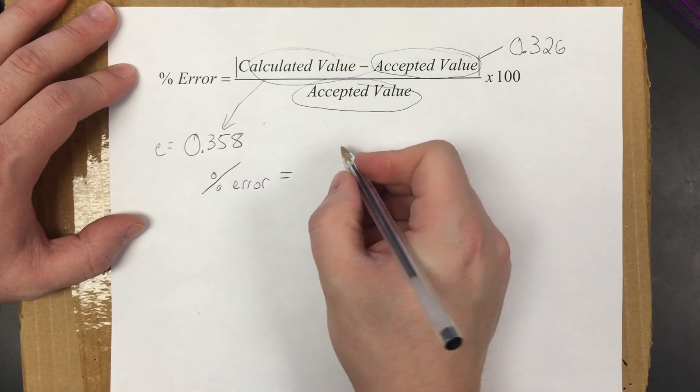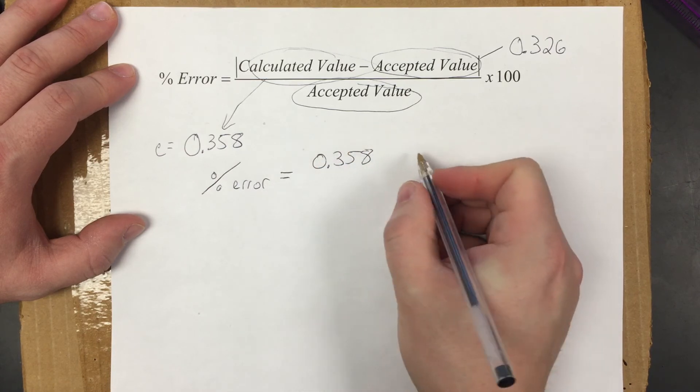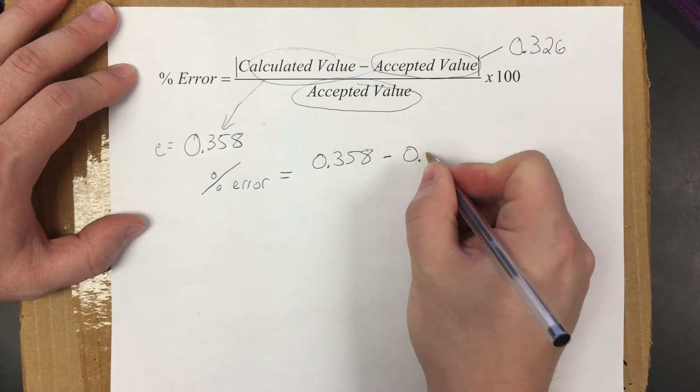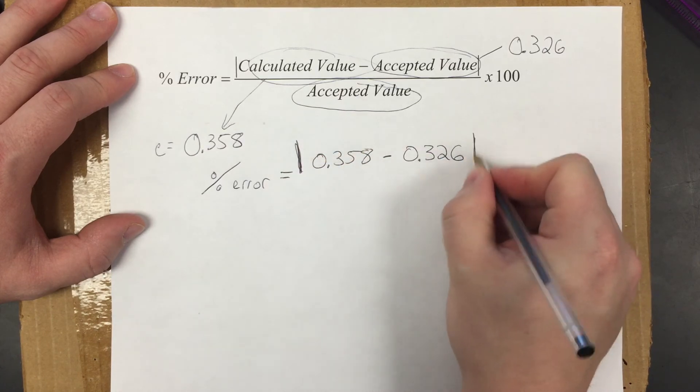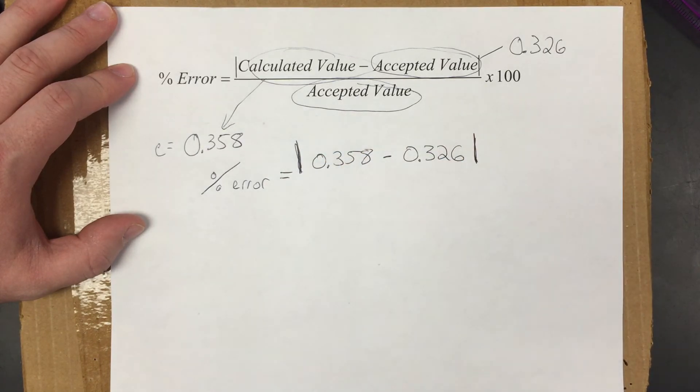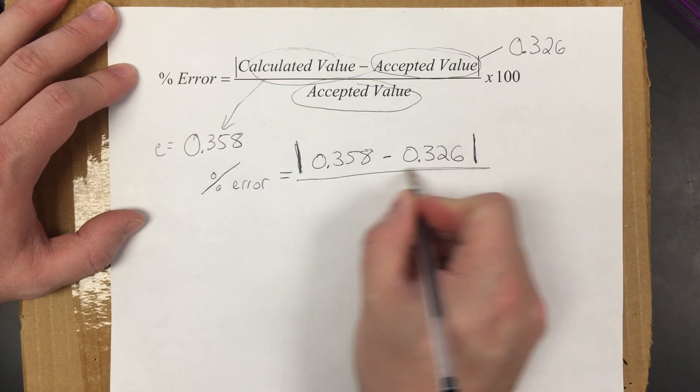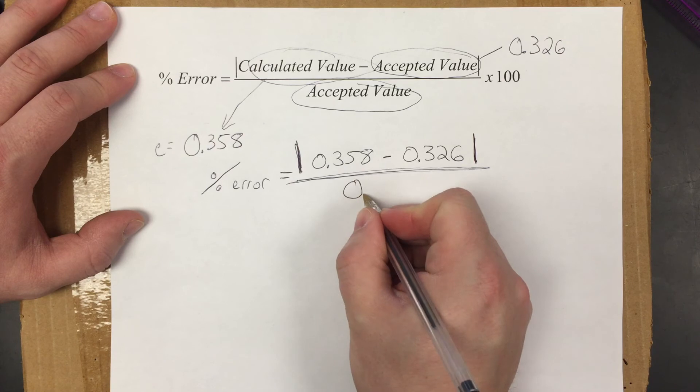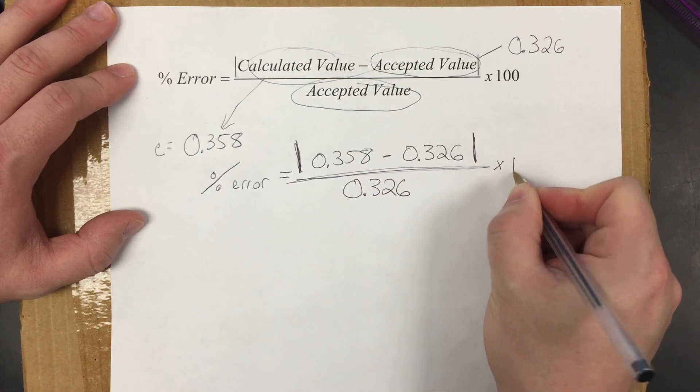So I'm going to do percent error equals my calculated value 0.358 minus the accepted value 0.326, and again that goes in absolute value bars so that value is always going to be positive no matter if I subtract one way and get a negative or not. We're going to divide the whole thing by the accepted value which we said was 0.326 times 100.